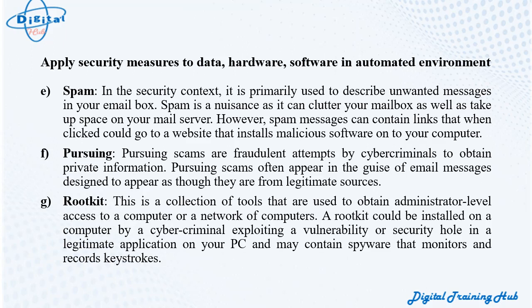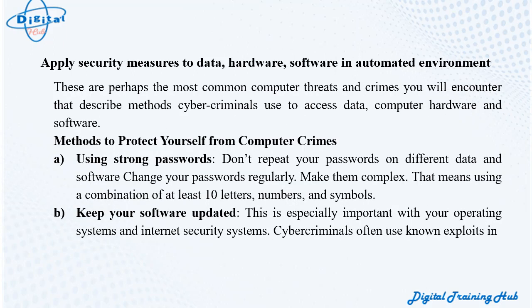Phishing scams are fraudulent attempts by cyber criminals to obtain private information, often appearing as email messages designed to look like they are from legitimate sources. Rootkit: a collection of tools used to obtain administrator-level access to a computer or network; a rootkit could be installed by a cyber criminal exploiting a vulnerability in a legitimate application and may contain spyware that monitors and records keystrokes. These are the most common computer threats and crimes describing methods cyber criminals use to access data, computer hardware, and software.